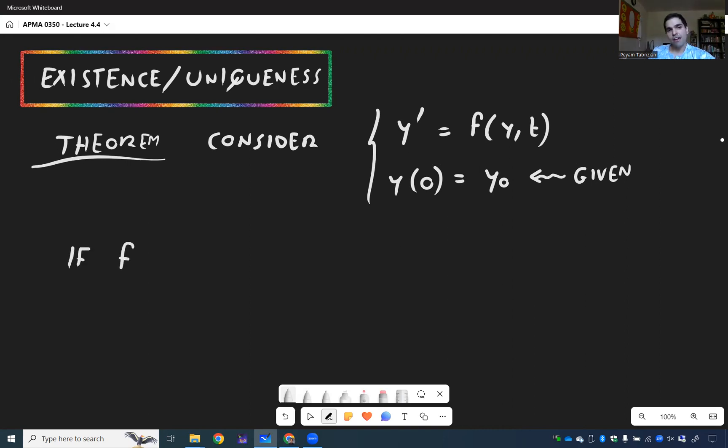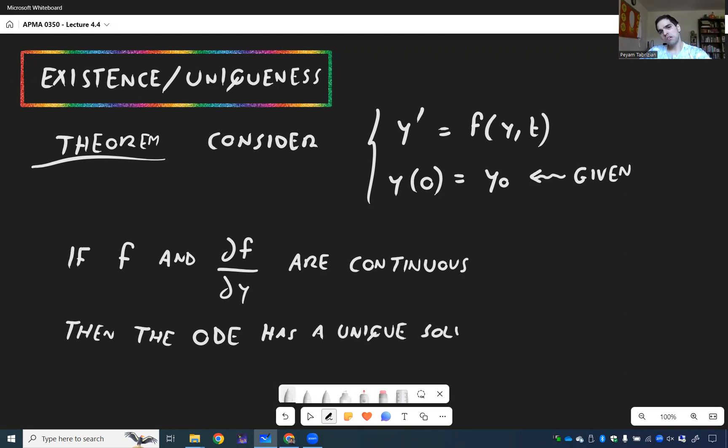More precisely, if f and what's called the partial derivative with respect to y are continuous, then we do have a unique solution. The ODE has a unique solution for y of t for t close to zero.